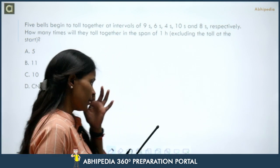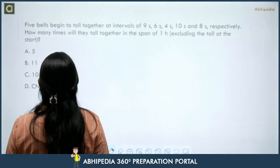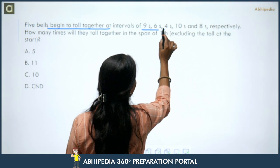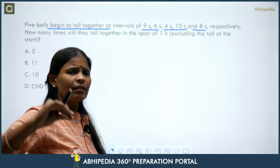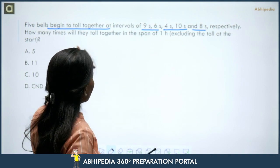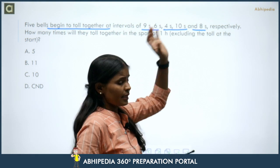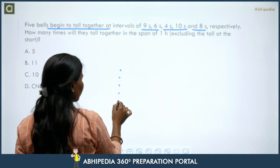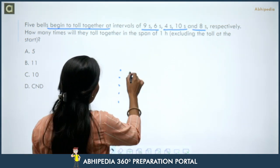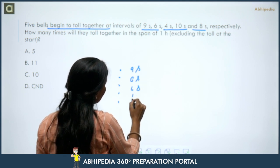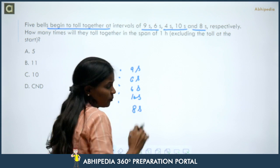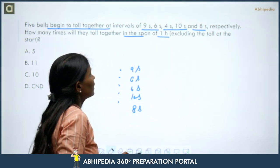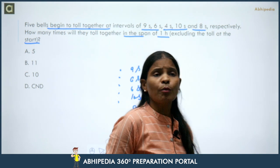The first question is on the screen. Five bells begin to toll together at intervals of nine seconds, six seconds, four seconds, ten seconds, and eight seconds respectively. The question is: how many times will they toll together in a span of one hour, excluding the toll at the start?